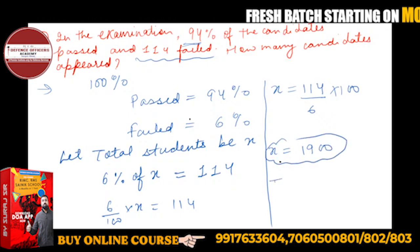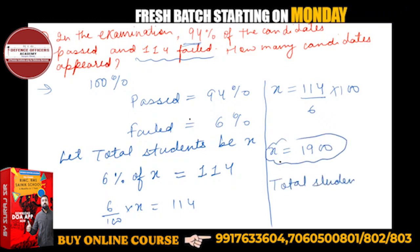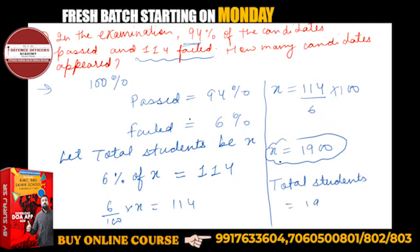x means total students. So total students, how much is it? 1900. So simple.